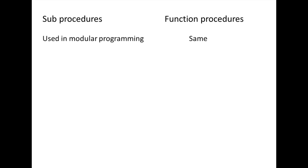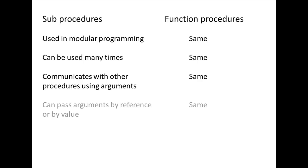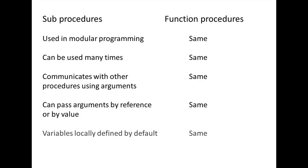In this lesson, you will learn about function procedures. There are many similarities between sub and function procedures. Both are used in modular programming to divide code into more manageable pieces. Both can be used multiple times in a program. Both communicate with other procedures using arguments. Arguments can be passed by reference or passed by value to both types of procedures, and variables are locally defined by default in both types of procedures.